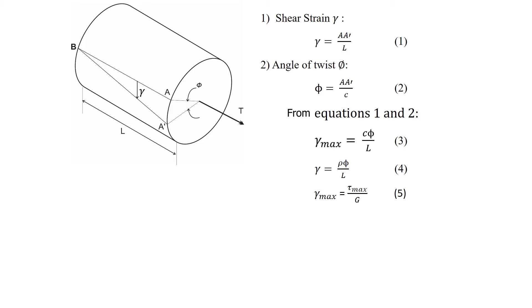We also know from the Hooke's law that gamma max equals tau max over the shear modulus of elasticity, G. And tau max equals T times C by J.